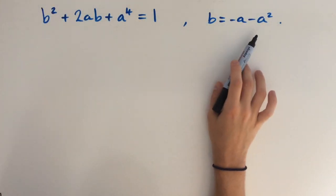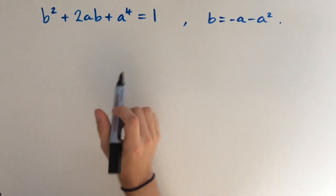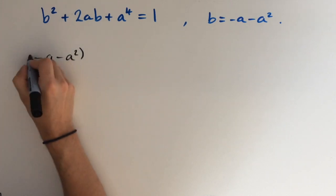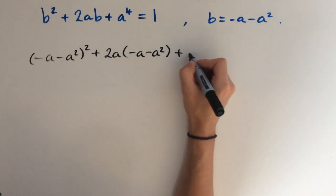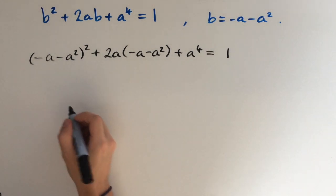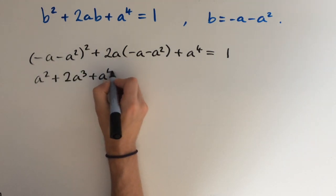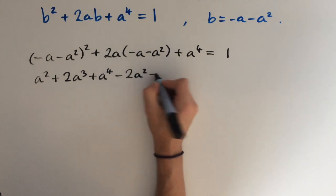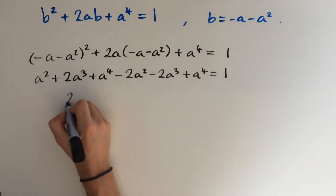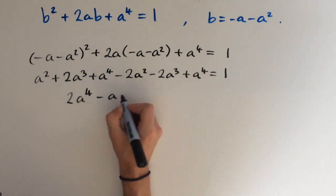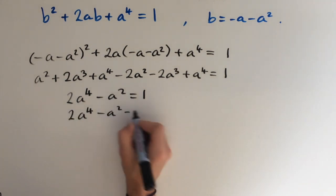So now we have two equations in two variables, and all we need to do is solve them to find values of a and b. I'm going to plug in this expression for b into the first equation. So we're going to get minus a minus a squared, all squared, plus 2a times minus a minus a squared, plus a to the power of 4, and this equals 1. We can expand these brackets to get a squared plus 2a cubed plus a to the fourth, minus 2a squared minus 2a cubed, plus a to the fourth, and this equals 1. This simplifies to 2a to the power of 4 minus a squared equals 1.